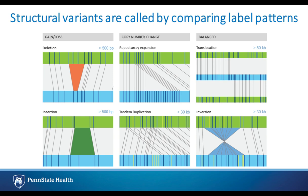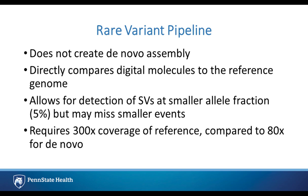That's the de novo pipeline, where you build a genome de novo based on overlaps of your molecules and then compare it to a reference genome. There's also the rare variant pipeline, which does not create a de novo assembly but instead directly compares digital molecules to a reference genome like HG38. This allows detection of structural variants at a smaller allele fraction — down to 5% — but may miss smaller insertion/deletion events. The rare variant pipeline requires approximately 300X coverage compared to about 80X for de novo. With the SP tissue isolation, I can pretty easily obtain at least 300X, so I can run both pipelines.